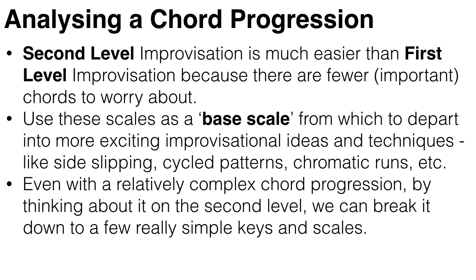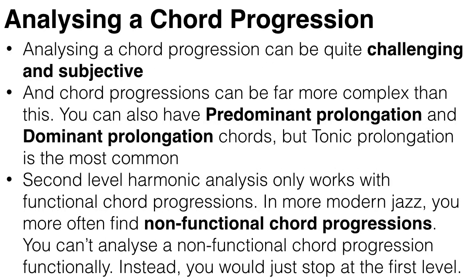I've got a whole playlist on jazz improvisation techniques which you can watch. Even though we have a relatively complex chord progression, by thinking about it on the second level we can break it down to a few really simple keys and scales, and use those diatonic scales as our basic bare-bones base scales, on top of which we add the usual chromaticism that jazz typically exhibits. Also note that chord progressions can be far more complex than this — you can have pre-dominant prolongation and dominant prolongation chords, but generally tonic prolongation is the most common.